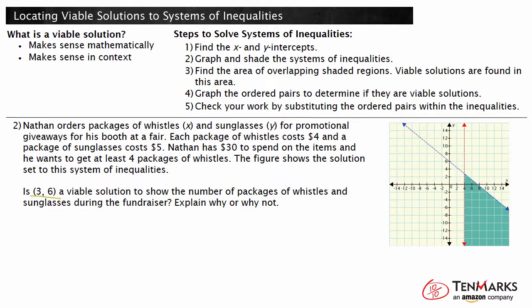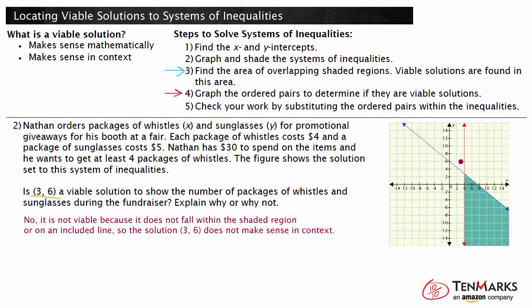We need to look at the image and determine if (3, 6) is a viable solution to this system of inequalities. In this problem, many of the steps are already completed for us — the system of inequalities has been solved and graphed. We know that viable solutions can be found in the shaded region and lines shown on the graph. We can graph the point (3, 6) on the coordinate plane and determine if it falls within the highlighted region or lines. This is not a viable solution because the point does not fall within the shaded region or lines of the graphed system of inequalities.